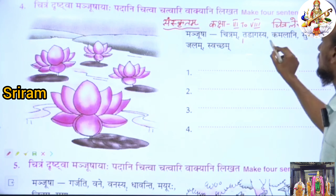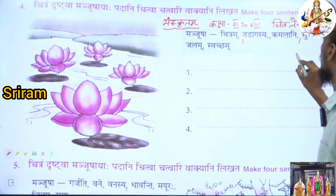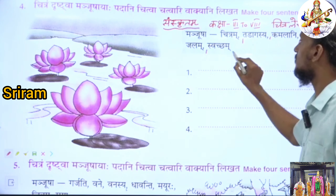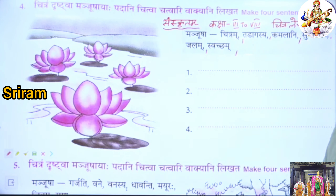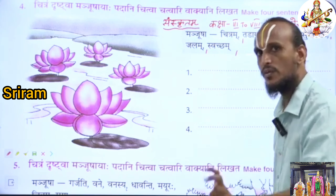The words in the clue box are: Chitram, Tadagasya, Kamalani, Sundarani, Jalam, Swacham. What is the meaning for these words? You have to analyze.